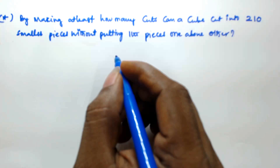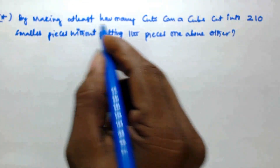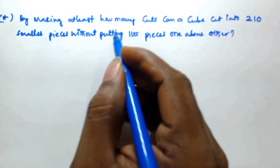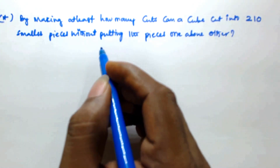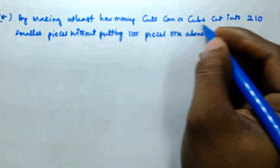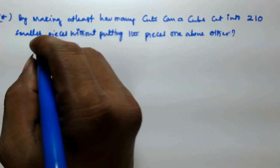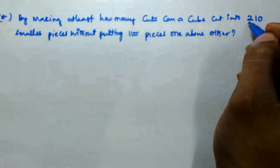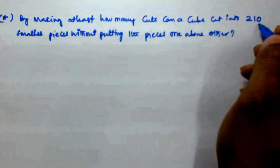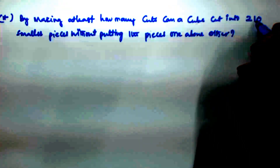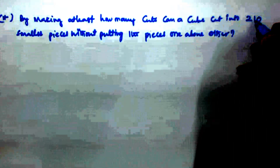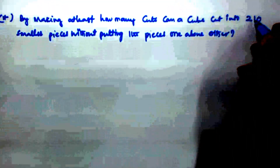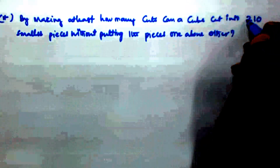In the previous video we found the number of pieces. In this case we have to find the minimum number of cuts, so this question is the reverse of the previous question. The total number of pieces the cube is cut into is 210. In the previous question, when the number of cuts was given, we equally distributed those cuts along the length, breadth, and height — the three dimensions of a cube.